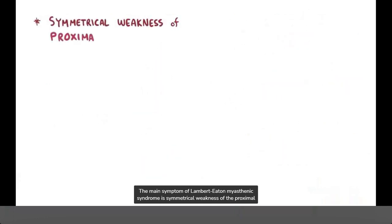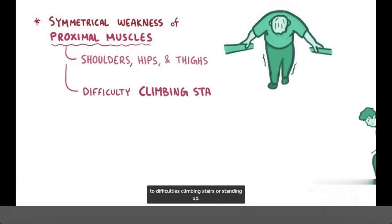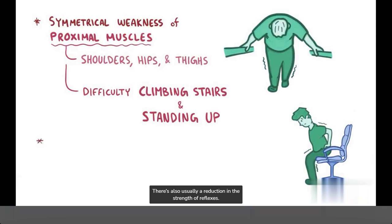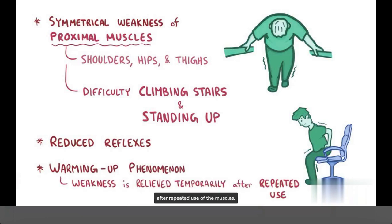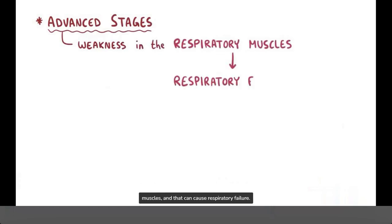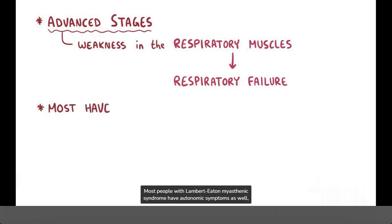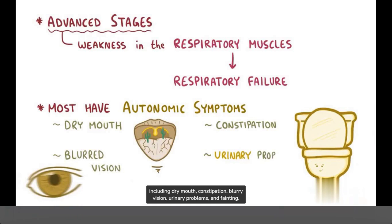The main symptom of Lambert-Eaton myasthenic syndrome is symmetrical weakness of the proximal muscles, like those in the shoulders, hips, and thighs, and classically that can lead to difficulties climbing stairs or standing up. There's also usually a reduction in the strength of reflexes. Individuals also experience a warming-up phenomenon, which is when weakness is relieved temporarily after repeated use of the muscles. In the advanced stages of the disease, individuals can also develop weakness in the respiratory muscles, and that can cause respiratory failure. Most people with Lambert-Eaton myasthenic syndrome have autonomic symptoms as well, including dry mouth, constipation, blurry vision, urinary problems, and fainting.